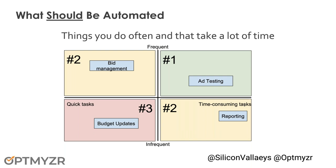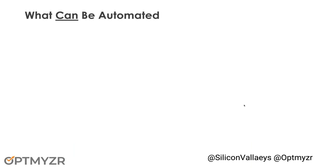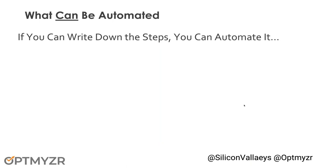After putting all my tasks on this quadrant, I know my number one task to automate is probably ad testing because I do it often and it takes a lot of time. Then I can look at the next two quadrants — that's what I'll automate next. And if I have some time and resources left, budget updates might be the final thing I build an automation for. So that's what should be automated.